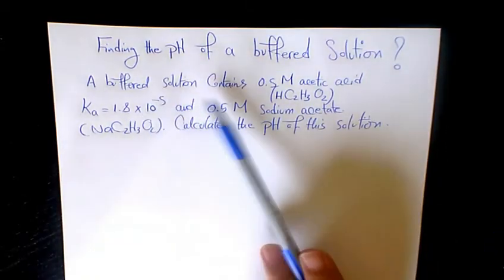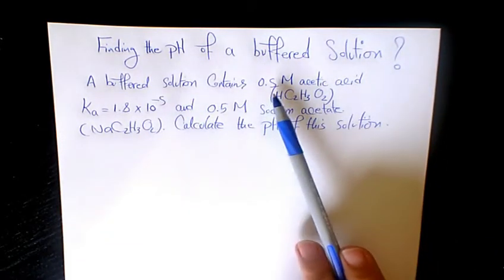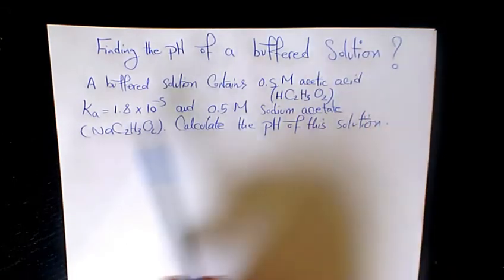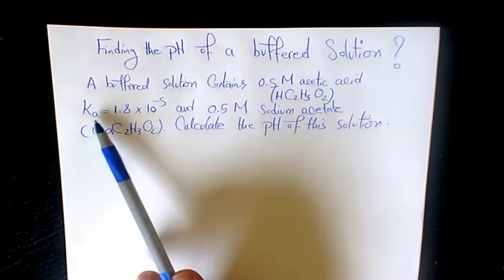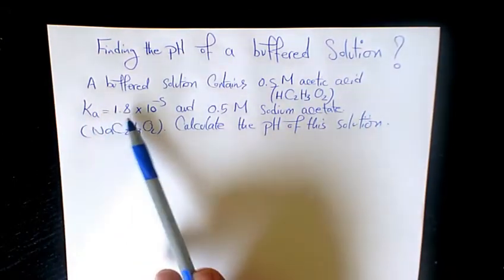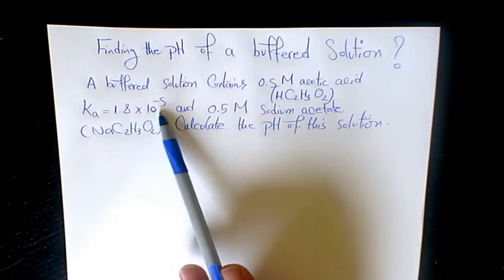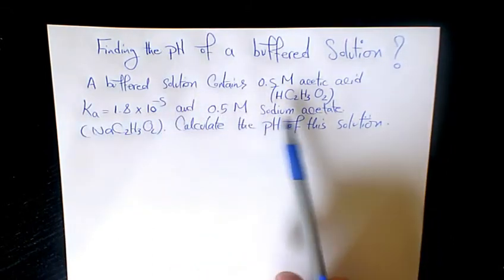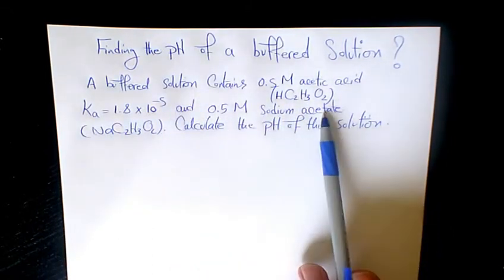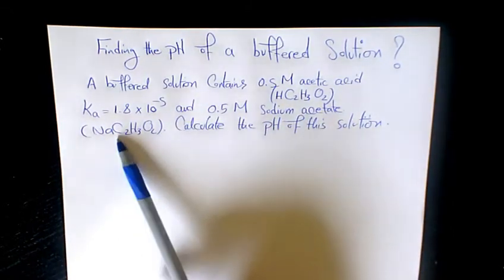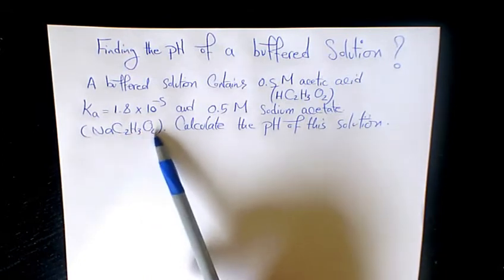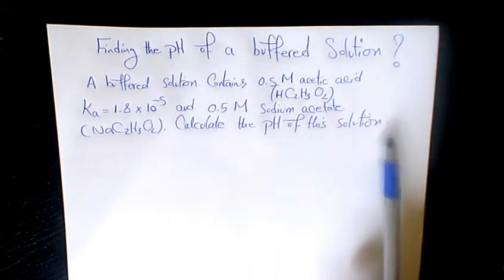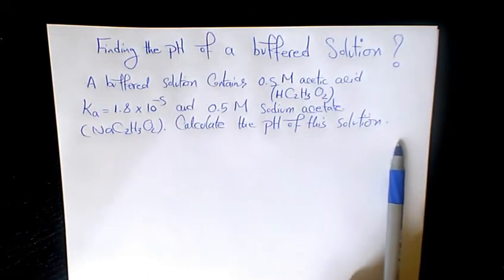A buffered solution contains 0.5 molar acetic acid with Ka 1.8 times 10 to the power of negative 5, and 0.5 molar sodium acetate, NaC2H3O2. Calculate the pH of this solution.